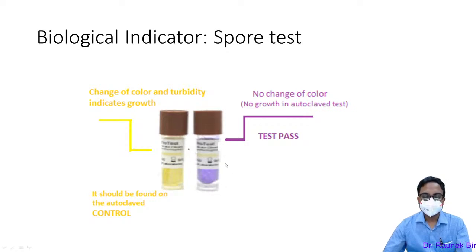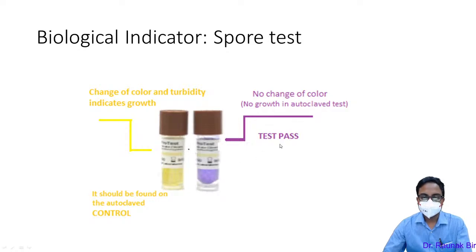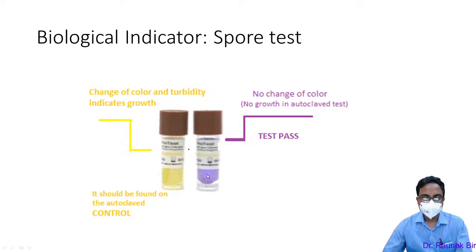In the spore test, the indicator is bromocresol purple. If there is no change in media color, the spores have been killed — no growth, no breakdown of glucose to produce acid, no pH change. If there is growth after 48 hours at 60°C, acid production from glucose breakdown causes a decrease in pH, changing the color from purple to yellow. This color change as well as turbidity indicates that the autoclave has failed.